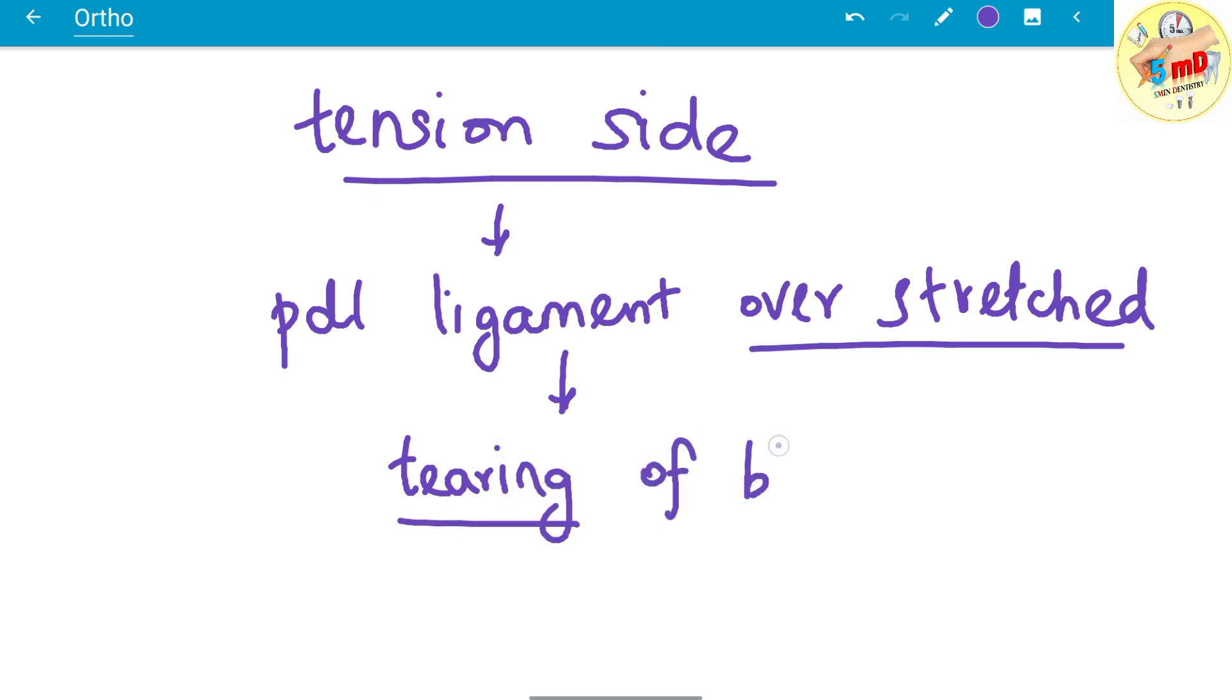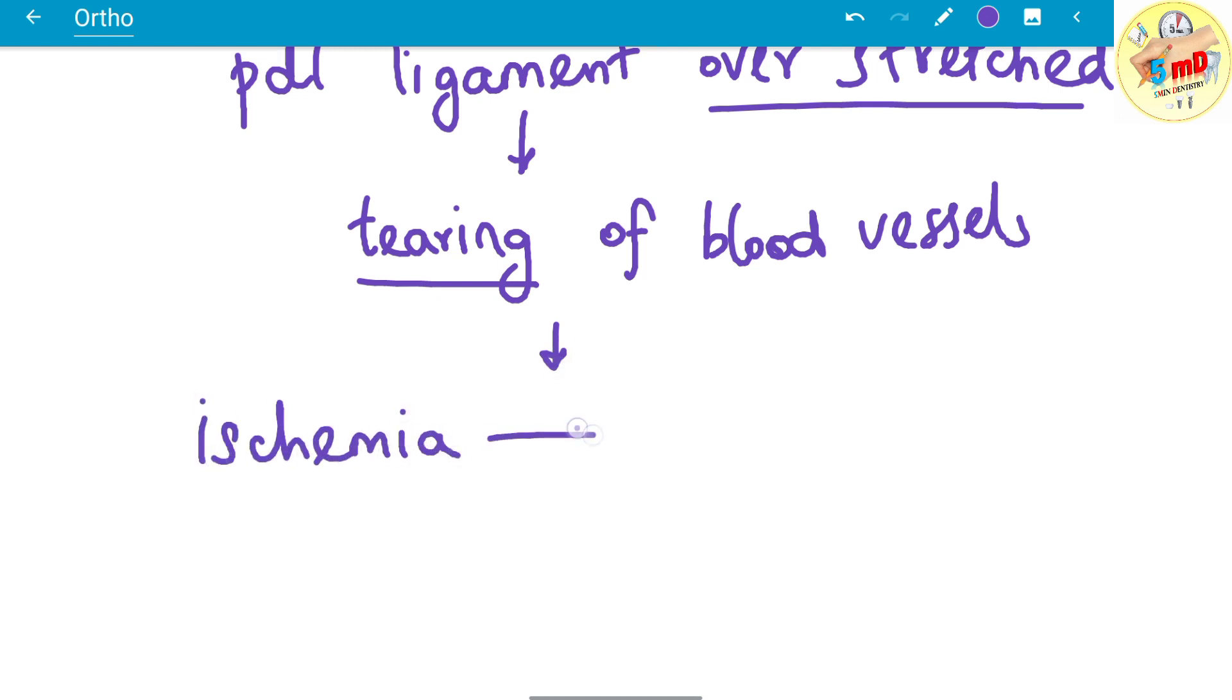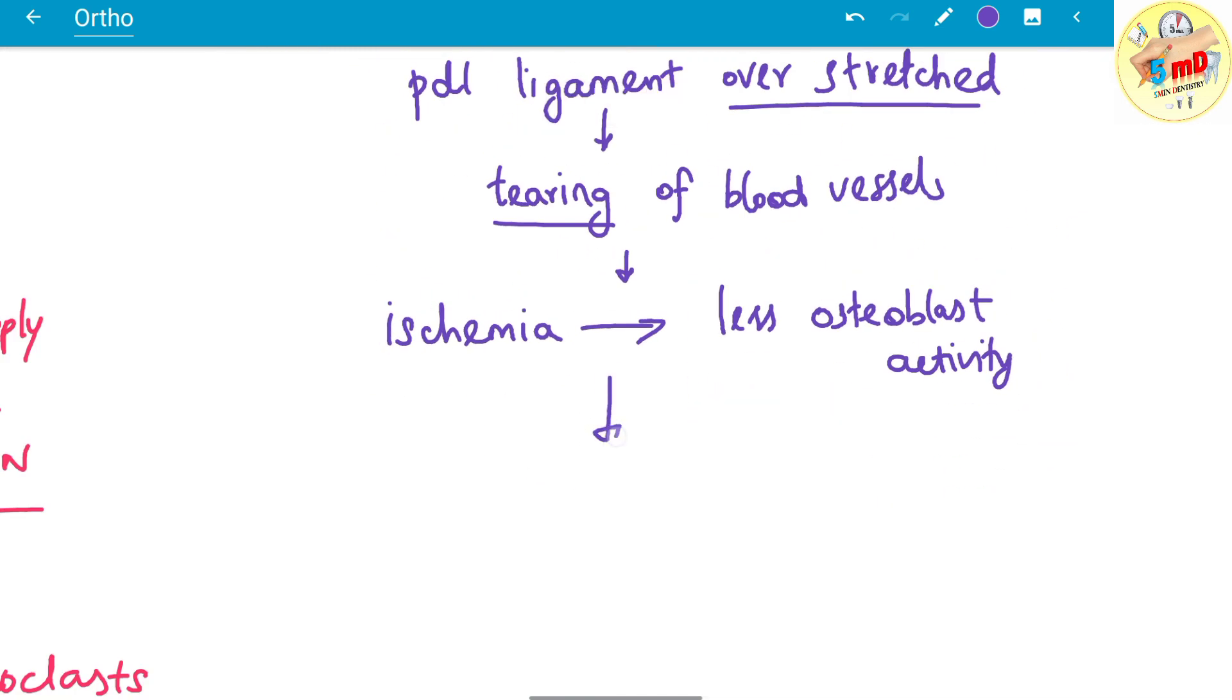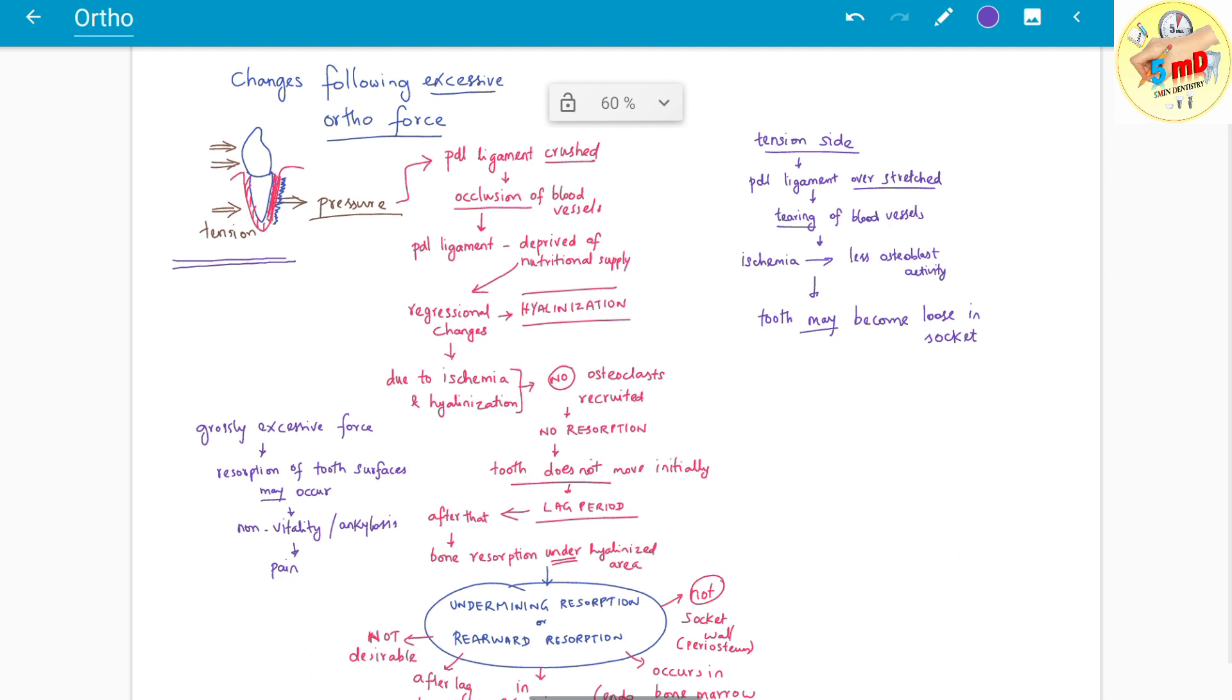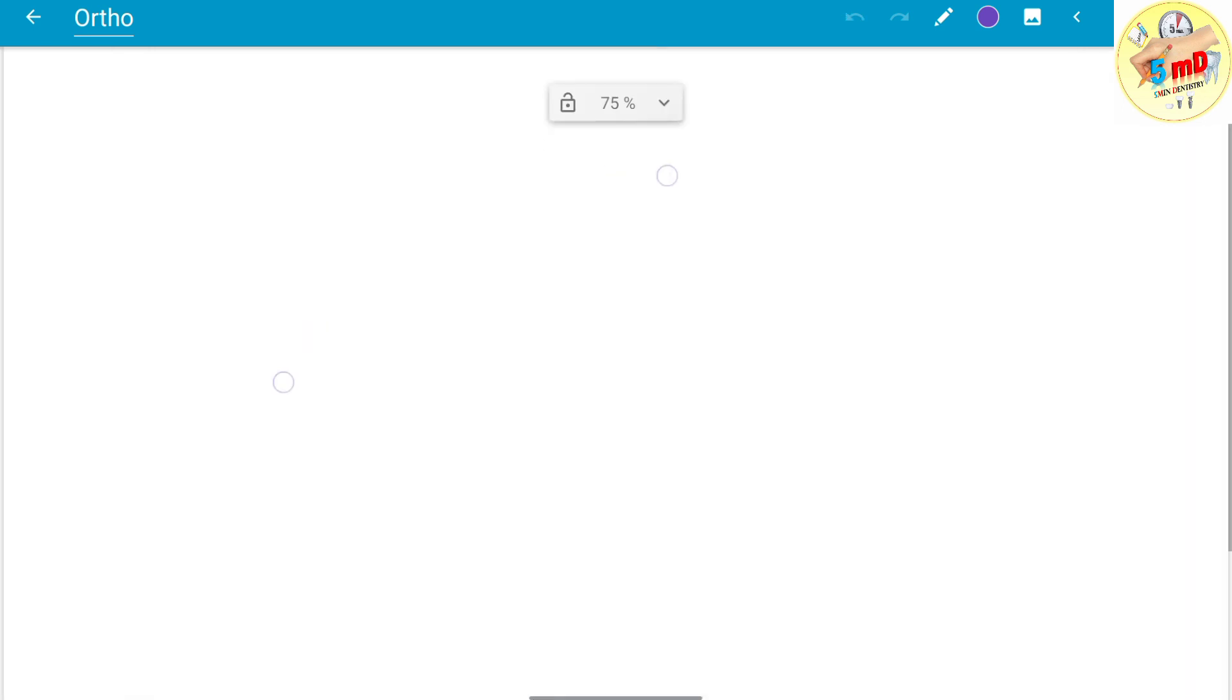This tearing of blood vessels eventually means ischemia and loss of blood supply. The ischemia means prevention of nutrition to the surrounding periodontal ligament and therefore less osteoblast activity. In mild ortho force there was bone formation, but here due to almost nil osteoblast activity, the tooth may become loose in the socket.